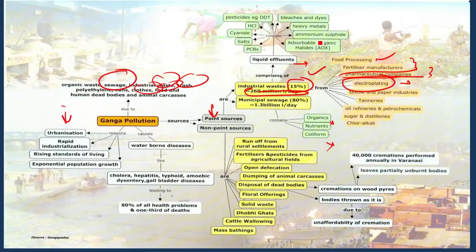Non-point sources include indirect ways of adding pollutants into the river, including runoff from the rural settlements. We know that still in rural areas, people practice open defecation. This open defecation leads to runoff of the fecal coliform into the nearby river source. When the rain falls to the ground, these human wastes are carried to the river, thereby polluting the river.